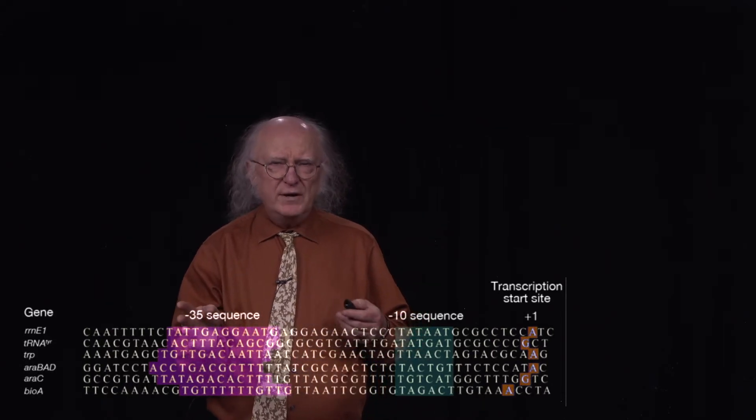If we line up all of the plus one sequences at the same place, we see that ahead of that plus one sequence, at a region around minus 10 — that is about 10 nucleotides 5 prime to the start site of the gene sequence — we see a common sequence that appears over and over. We note that that common sequence is not identical, but it's very rich in what are called AT sequences, that is A's or T's, and of course the complement on the other strand would be an A or a T as well.